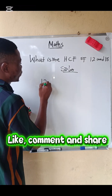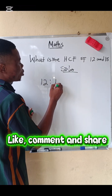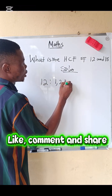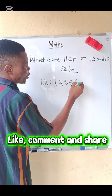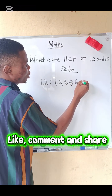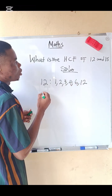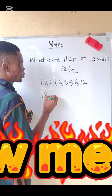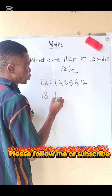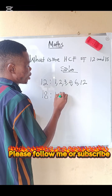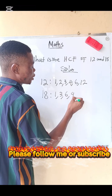For 12, we have one, two, three, four, six, and 12 itself. For 18, we have one, three, six, nine, and 18.